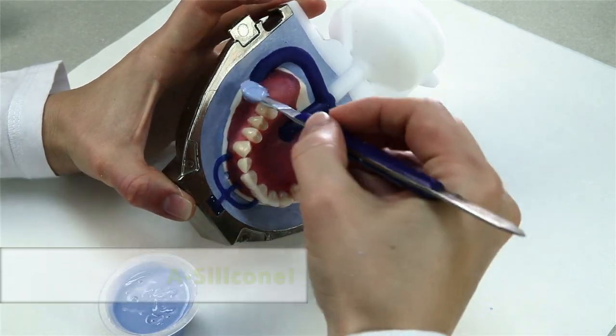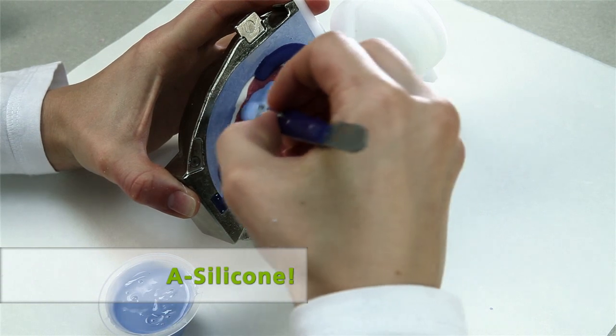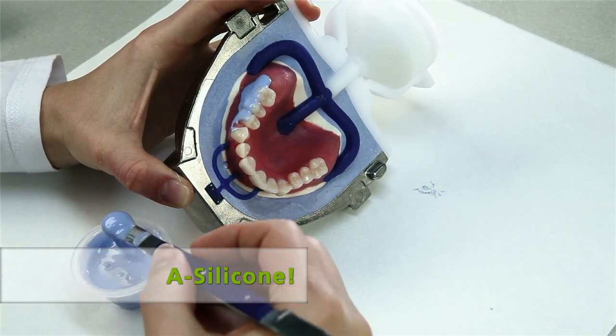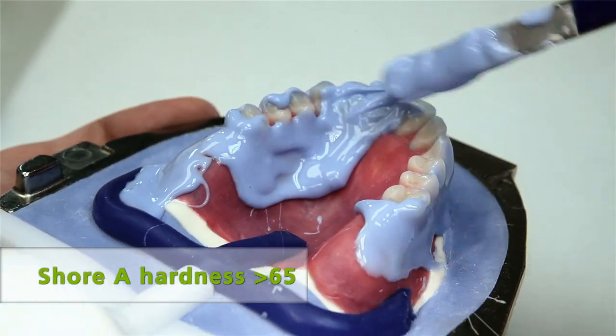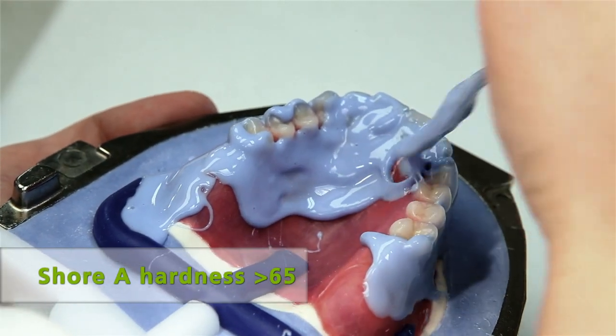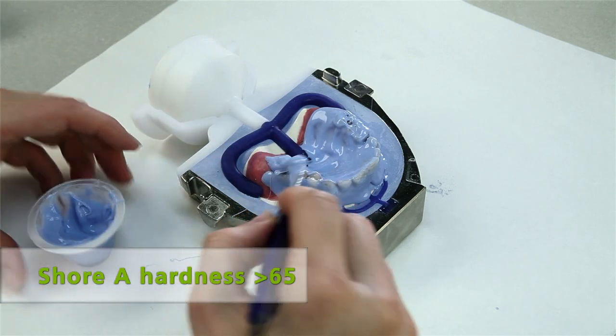Cover the teeth as well as the anatomically contoured alveolar area and the lingual or palatal areas if required with a flowable to medium viscosity addition cross-linking silicone. The Shore A hardness should be at least 65.